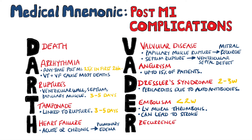Finally, we have R for recurrence, because often these patients have other risk factors that initially contributed to the original MI and so they may be at risk of another. Markers include diabetes, eGFR, and age. R also reminds you of the regurgitation that may be seen with the rupture of the papillary muscle.